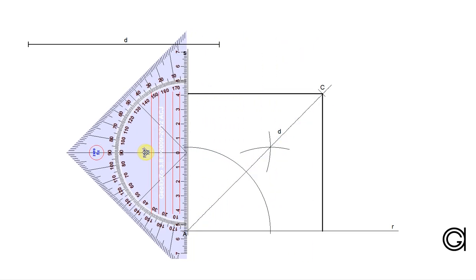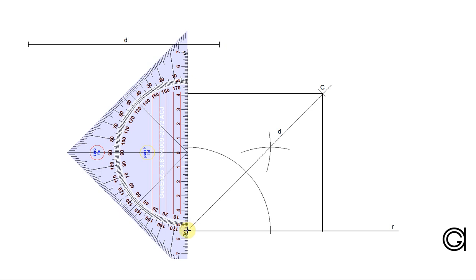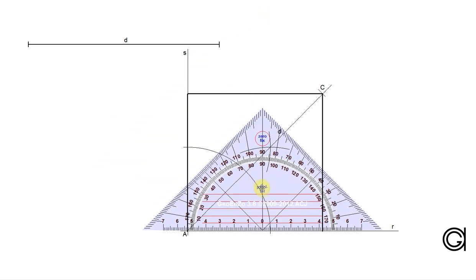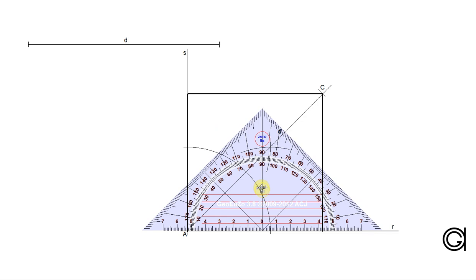Now we have our square. We outline the square with thicker lines, joining vertex A to D and completing the last base from vertex A to B.